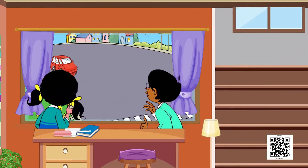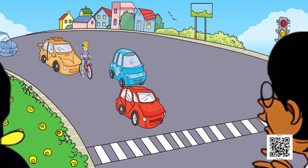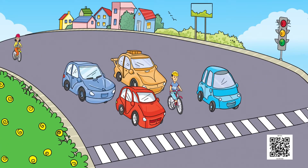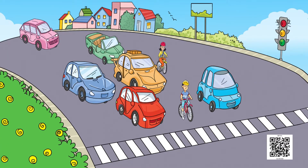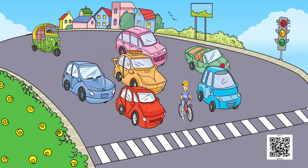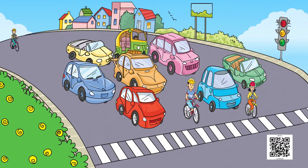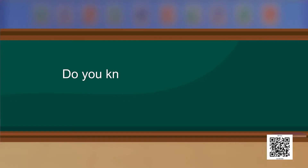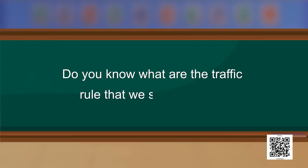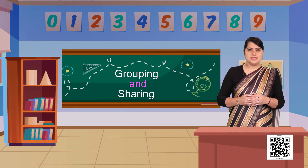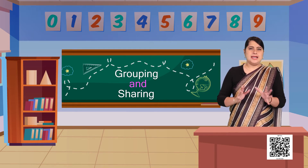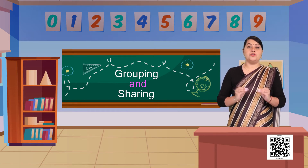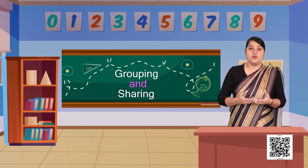The first thing first, I have two of my friends who are seeing this picture and they are observing something outside their window. I see they are looking at the road. Before we get to know what they are discussing, do you know what are the traffic rules that we should follow? Some of you know and some of you don't know. Let us try and see which are the very important rules that you must follow when you are out on a road.